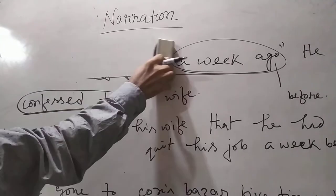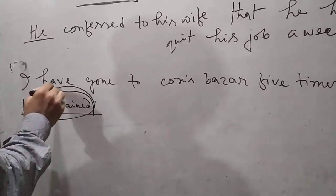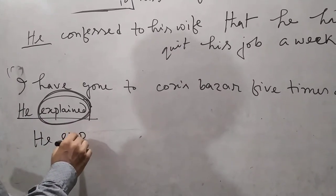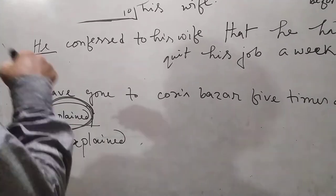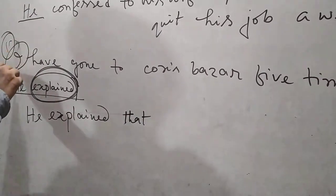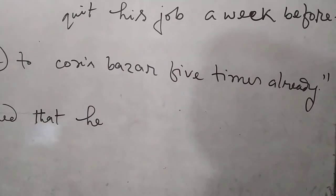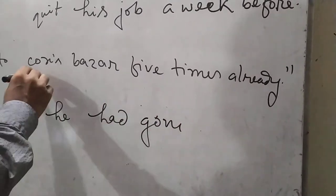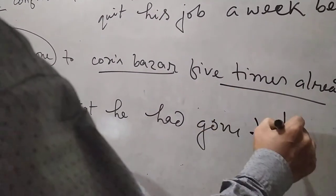Dear student, look at another sentence: He explained, 'I have gone to Cox's Bazar five times already.' Here 'explained' is also not 'said' or 'said to', so it will not be changed. 'I' is first person, 'have gone' is present perfect tense, so it will be changed into past perfect. The sentence changes: he explained that 'I' → 'he', 'have gone' → 'had gone'. Result: He explained that he had gone to Cox's Bazar five times already.